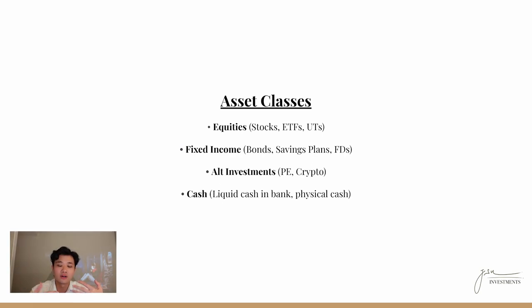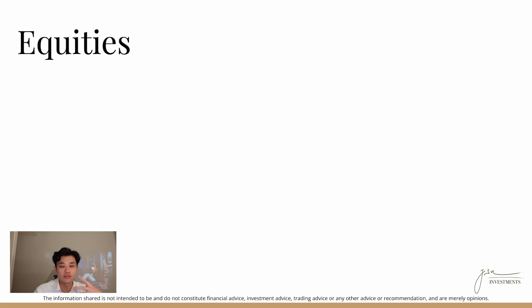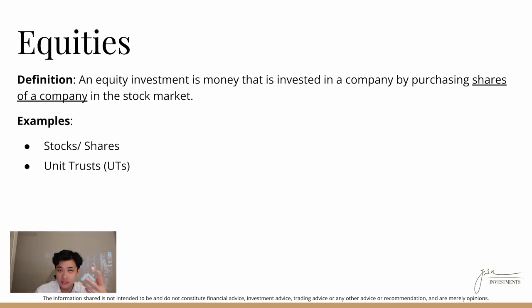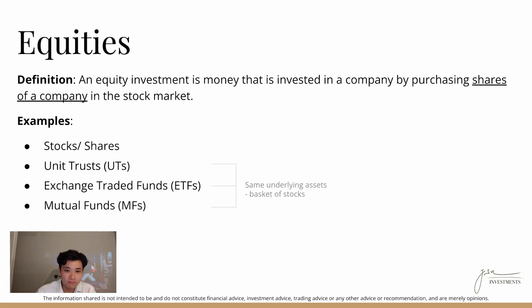Let me break down each of these individual asset classes so you get a better understanding. First, equities. Examples include stocks and shares, unit trusts, exchange-traded funds (ETFs), and mutual funds. Just so you know, UTs, ETFs, and mutual funds are all essentially invested into the same underlying assets — a basket of stocks. So a stock or share can be, for example, a Microsoft stock or an Apple stock. When you invest into a UT, ETF, or mutual fund, you are essentially investing into a basket of stocks — generally 50 to 100 different stocks in one fund.